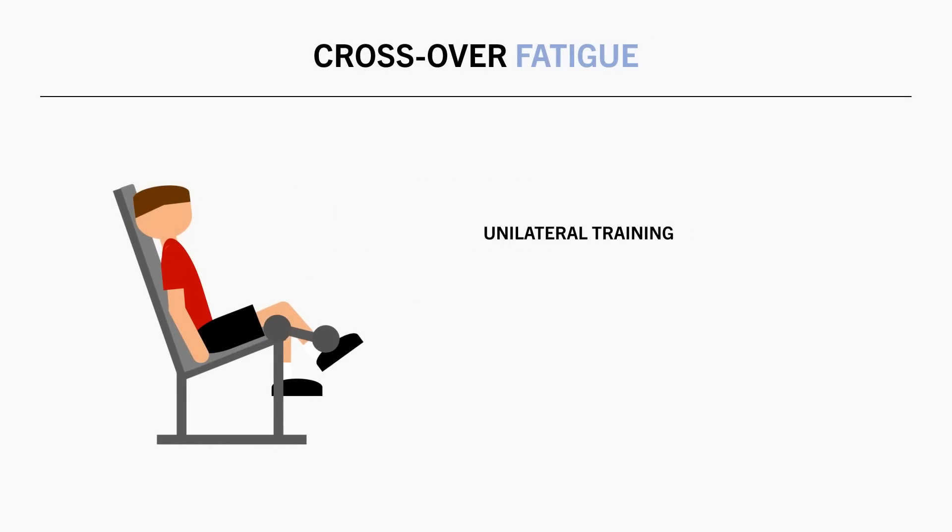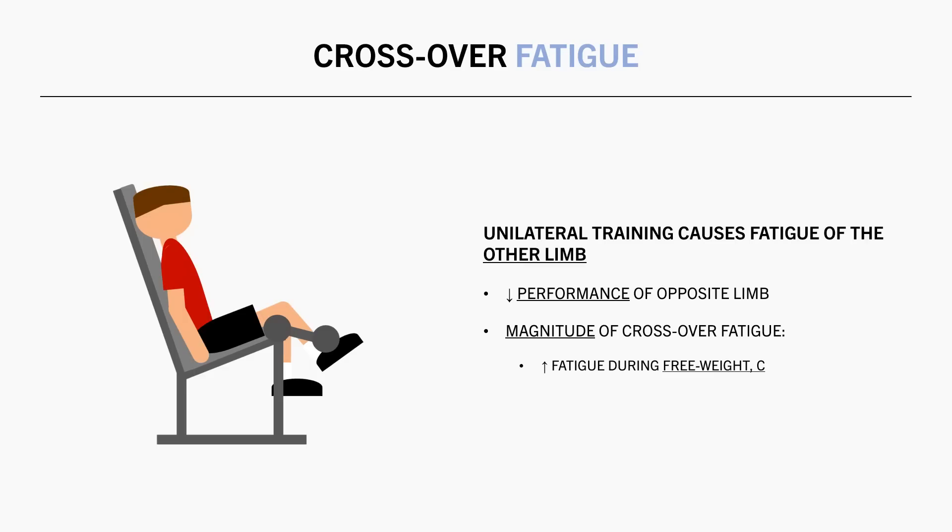So there appears to be somewhat of a central fatigue mechanism at play here. When we train one limb first we may not be able to match the same load or reps with the other limb in the following set. This may compromise hypertrophy to some extent compared with bilateral training, and the magnitude of crossover fatigue is likely to be dependent on the nature of the exercise. Free weight compound lifts are more likely to have greater crossover fatigue whereas machine-based isolation lifts will probably have less crossover fatigue. For example a rear foot elevated split squat will probably have more crossover fatigue to the other limb compared with a single arm overhead tricep extension.